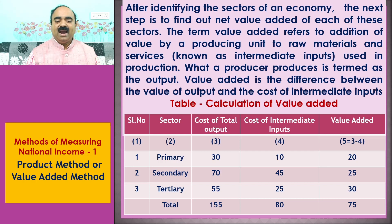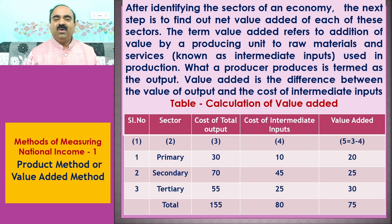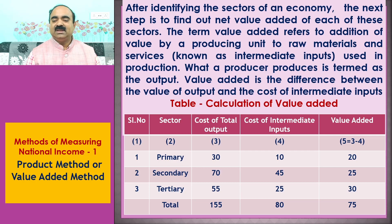I have given a table showing the calculation of value added. In this table, there are 5 columns: the first column shows the serial number of the sector; the second column shows the sector; the third column shows cost of total output; the fourth column shows cost of intermediate inputs; and the fifth column shows value added. Value added is the difference between cost of total output and cost of intermediate inputs, as shown in the last column.